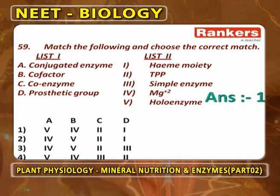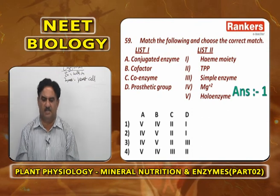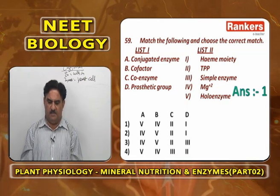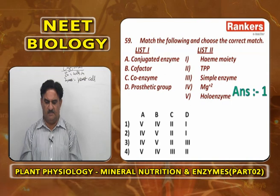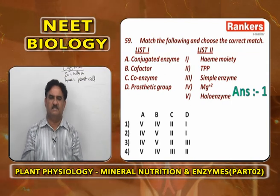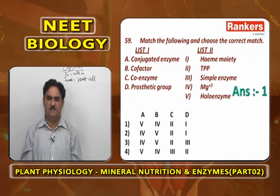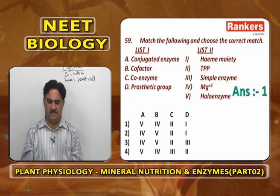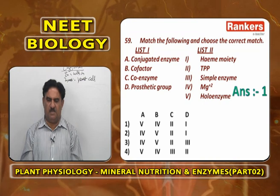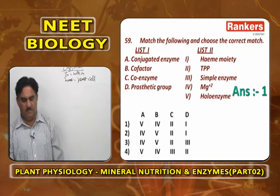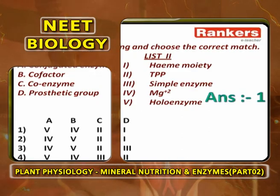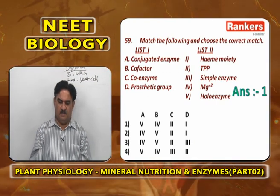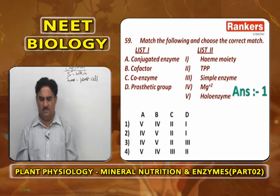Match the following: conjugated enzyme, cofactor, coenzyme, prosthetic group with heme moiety, thiamine pyrophosphate, simple enzyme, magnesium, and holoenzyme. Conjugated enzyme is also called holoenzyme (A5). Cofactor is magnesium, which activates hexokinase (B4). Coenzyme is thiamine pyrophosphate (C2). Prosthetic group is the heme moiety of peroxidase enzyme (D1). So the answer is A5, B4, C2, D1.